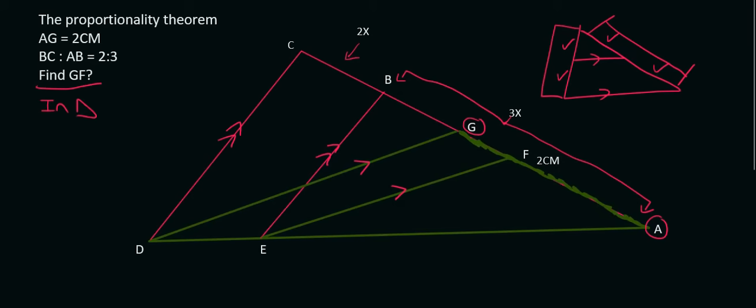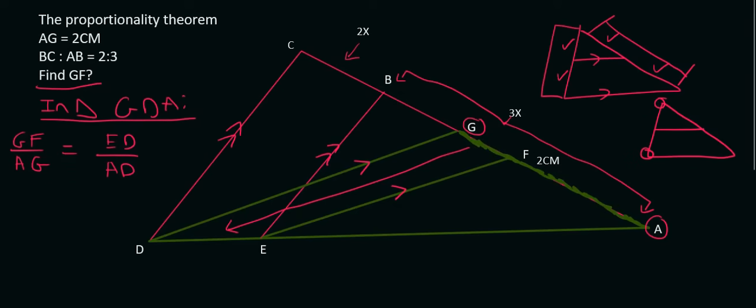So we can say in triangle GDA, we know the following. We can say that GF over AG. The reason I used AG is because I know AG. I'm not going to say over AF because I don't know AF, and we want to have as little unknowns as possible. That's going to be the same. Well, GF matches ED, and AG matches AD. Can you see in that triangle? The whole of AG matches with the whole of AD. It's like if this over this will be the same as this one and this one. Let's fill in whatever we have. And the reason for that was prop theorem because of the fact that GD was parallel to EF. Those two green lines are parallel.